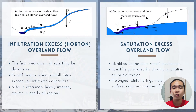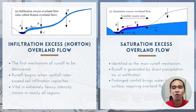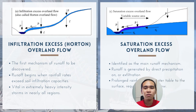First is infiltration excess, commonly known as Horton Overland Flow. It was said to be the first mechanism of runoff to be discovered and was thought to be the main mechanism of all runoff for quite some time. It occurs when water enters a soil system faster than it can be absorbed or moved, such as when precipitation exceeds the soil infiltration capacity. This was a very important process in areas where significant soil crusting occurs during rain events and more generally during storms with very high rainfall intensities.